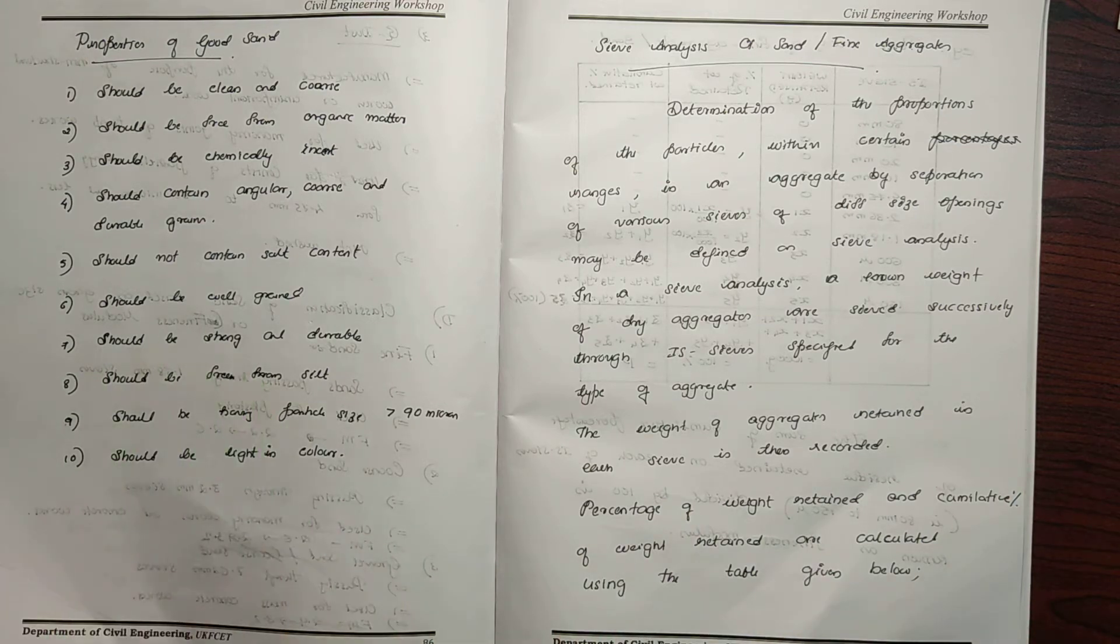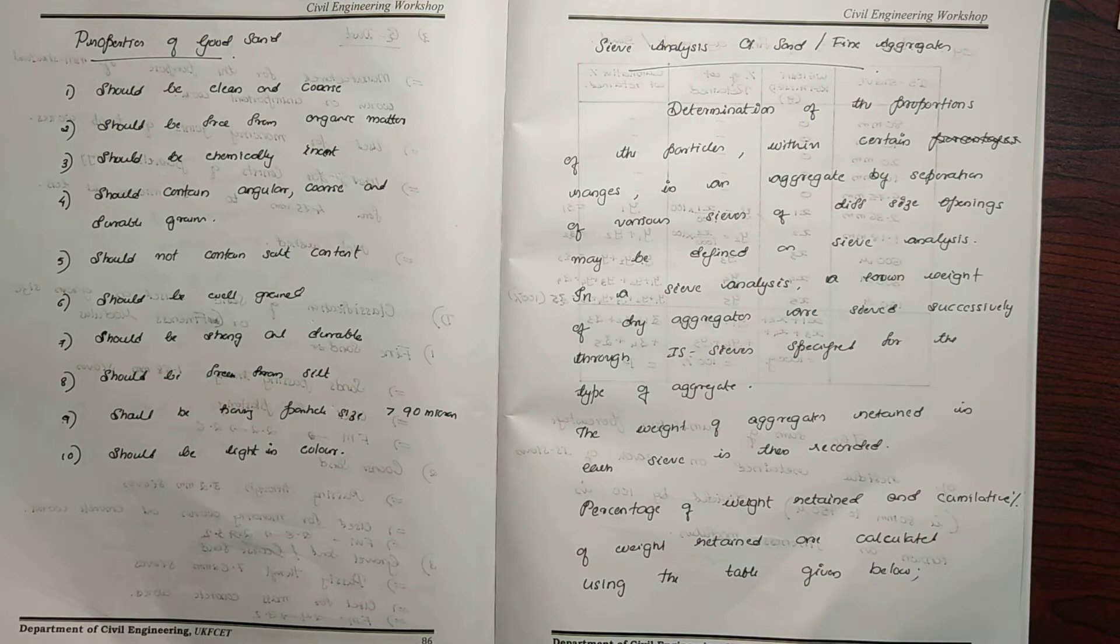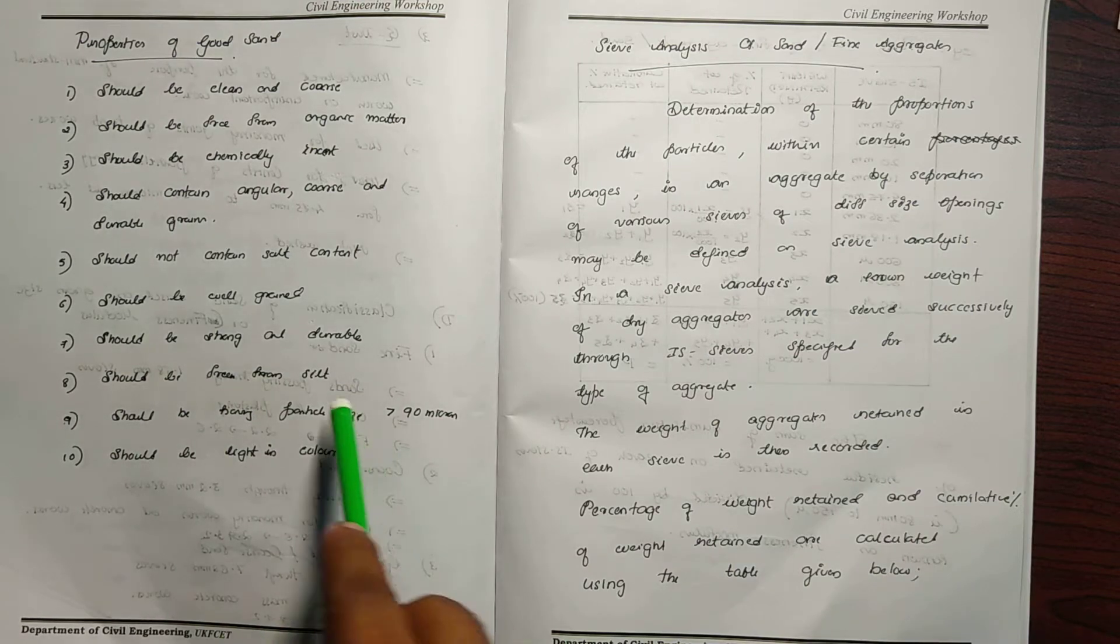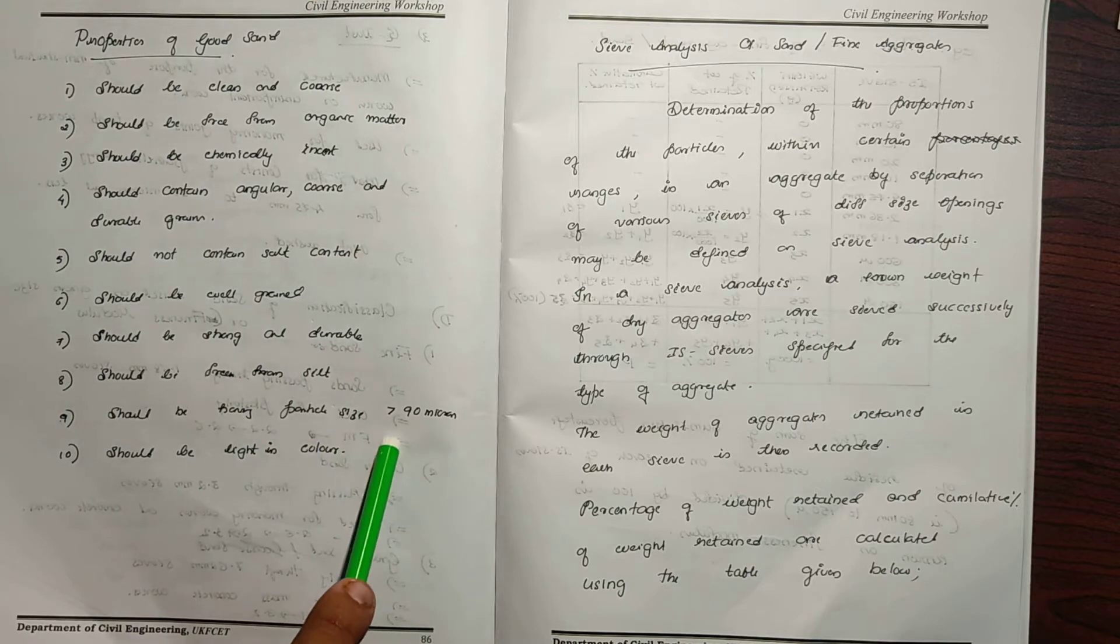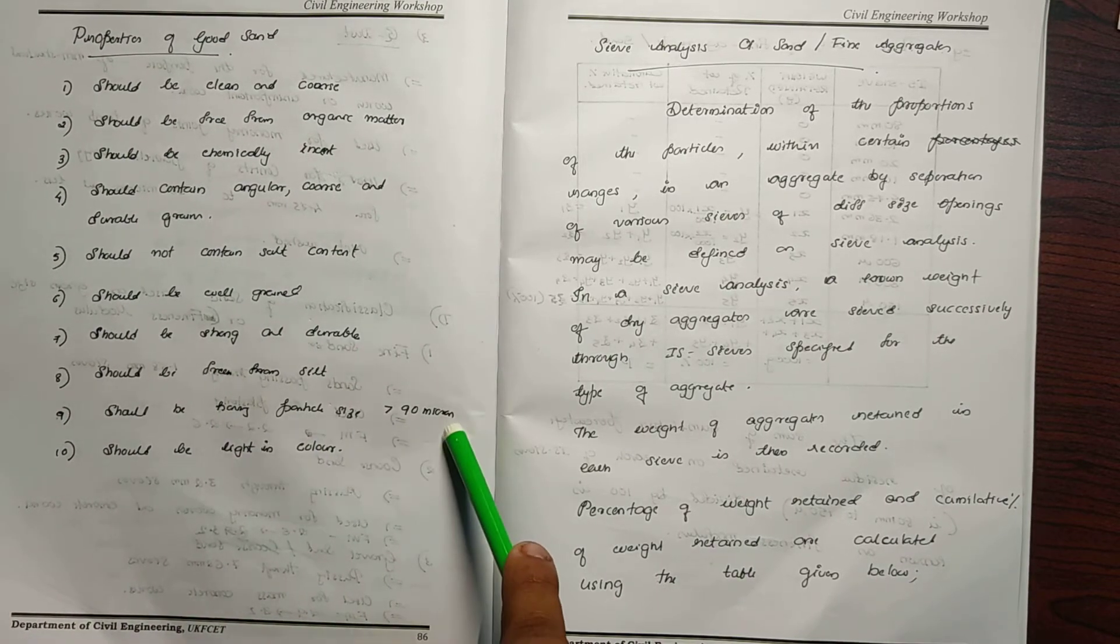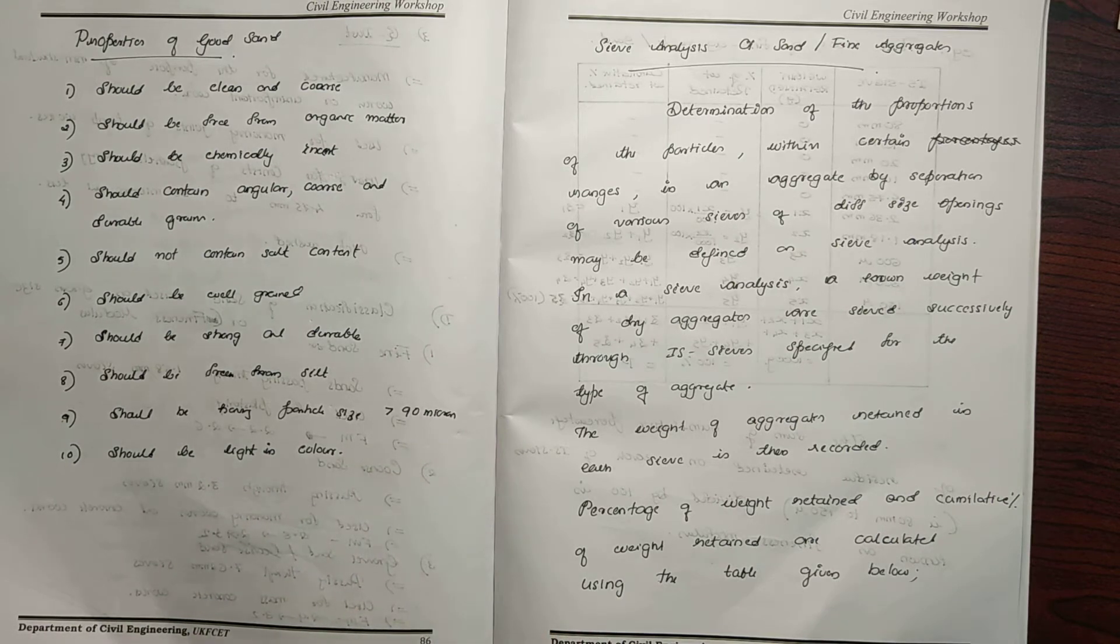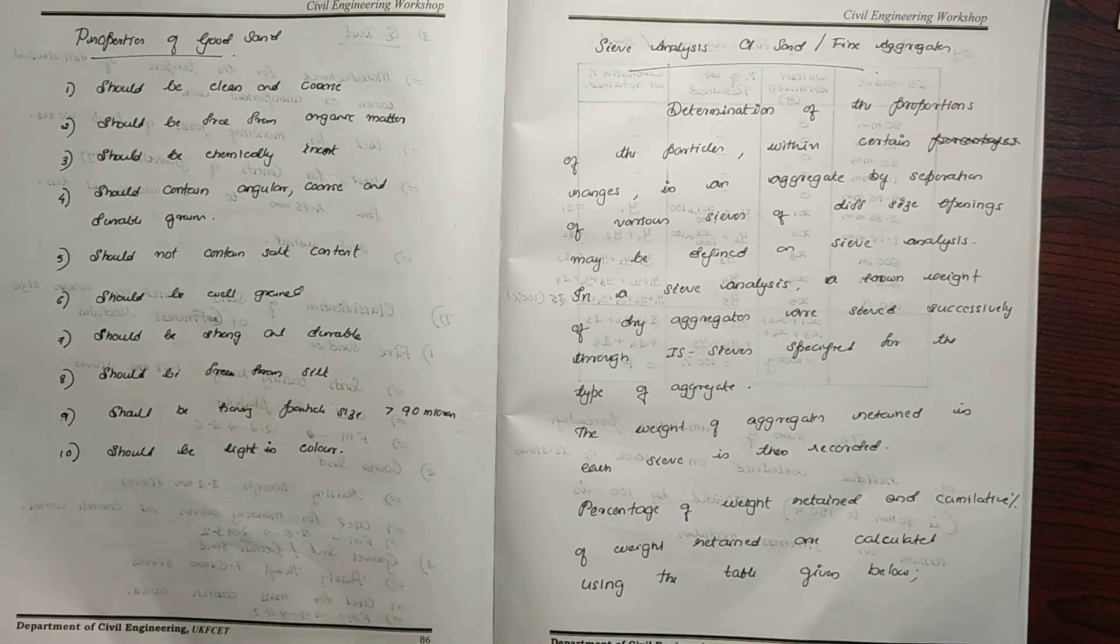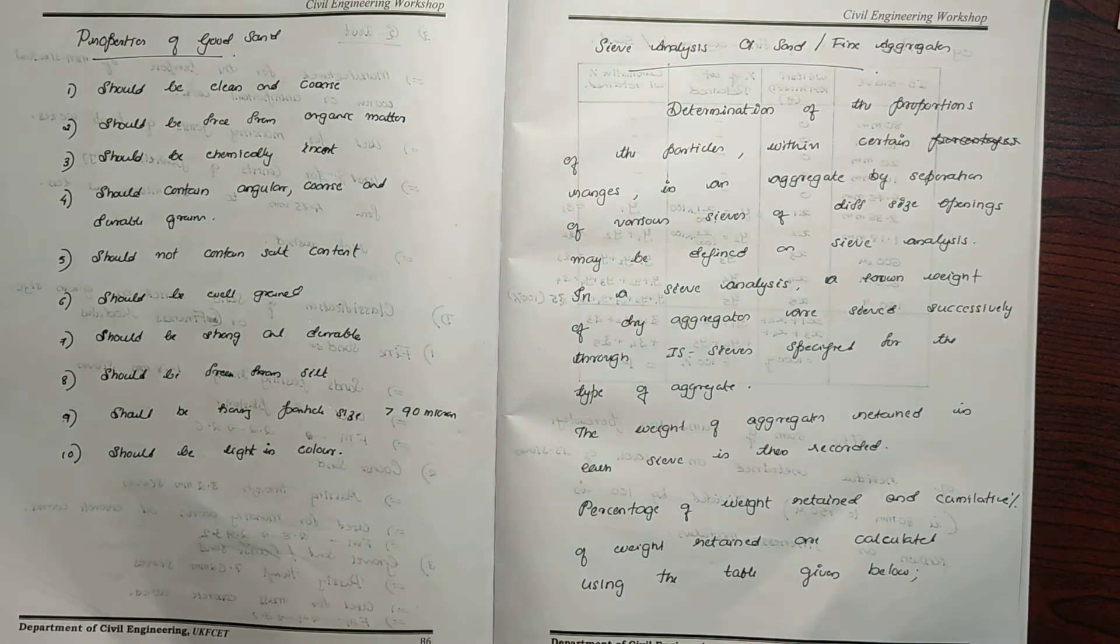Sand should be strong and durable and should be free from silt. It should have a particle size greater than 90 microns, preferably 100 microns. Sand should be light in color. These are the properties of good sand.